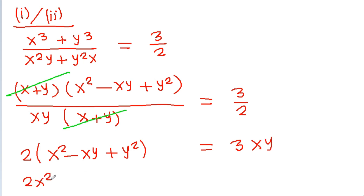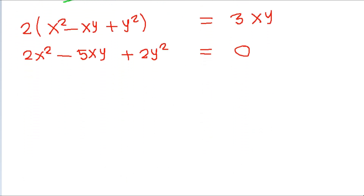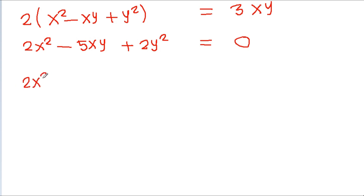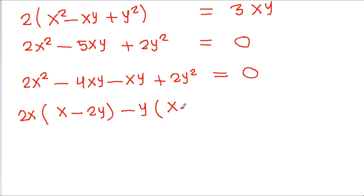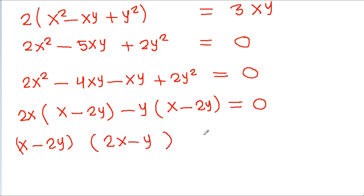This gives us 2x squared minus 5xy plus 2y squared equals 0. Factoring: 2x squared minus 4xy minus xy plus 2y squared equals 0. Taking 2x common gives (x minus 2y), and taking minus y common also gives (x minus 2y). So we get (x minus 2y)(2x minus y) equals 0.